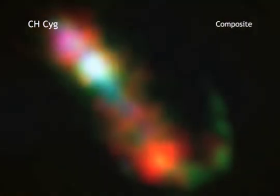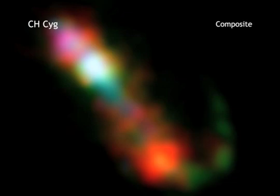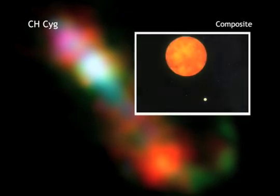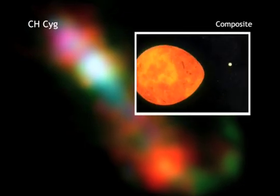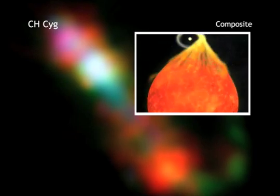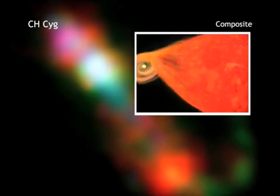Deep within this optical image lies an intriguing system known as CH Cygni. CH Cygni is a binary star system containing a white dwarf that feeds from the wind of a red giant star. The material from the wind forms a hot accretion disk around the white dwarf before crashing onto the star.